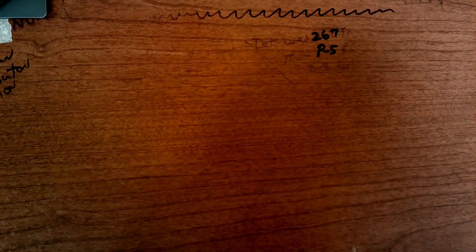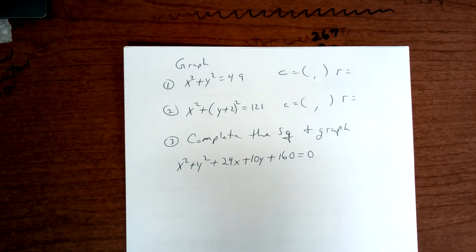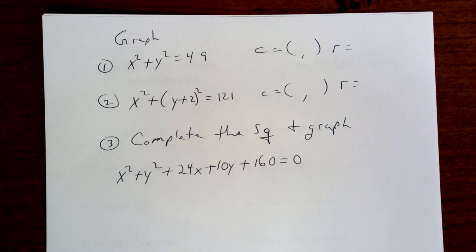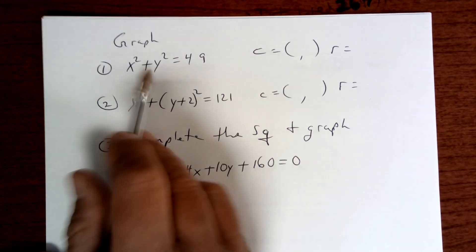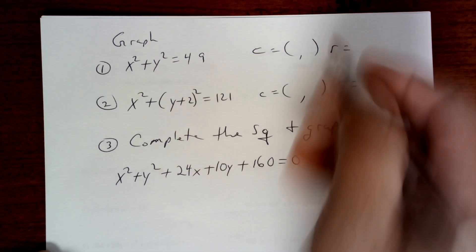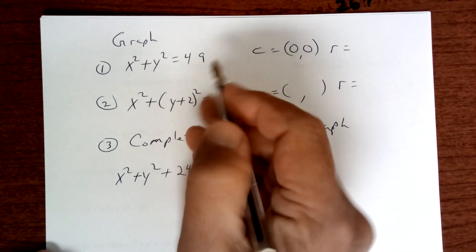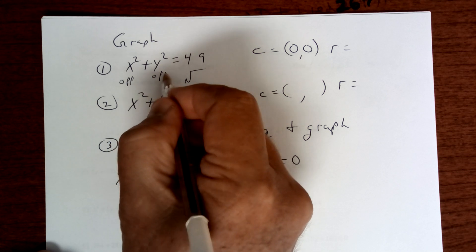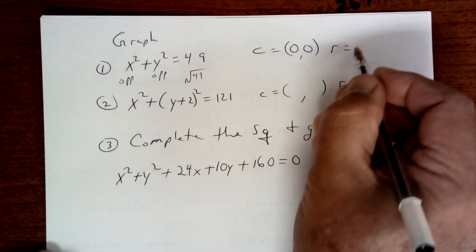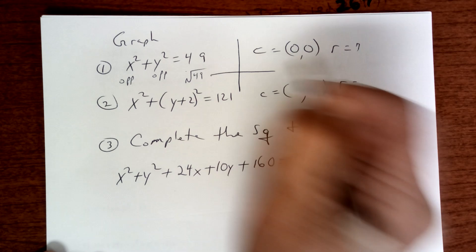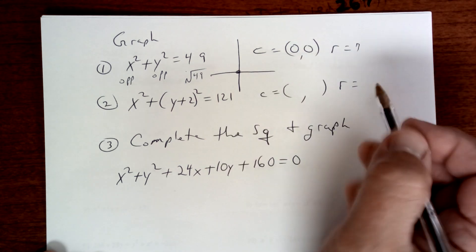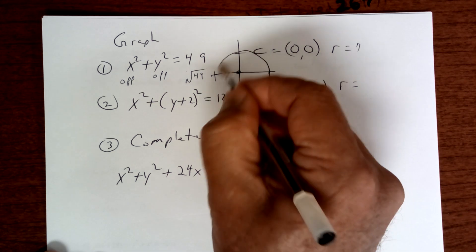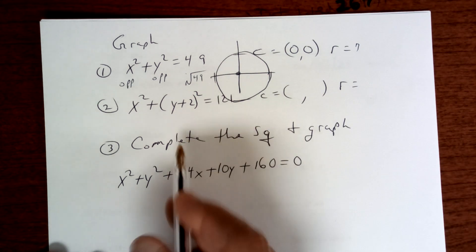And here we are right here. Okay, so for college algebra, let's take a look. Well, the center here, this is a circle, so it's (0,0). And the square root of 49 - remember, opposite, opposite, square root - so the radius is 7.